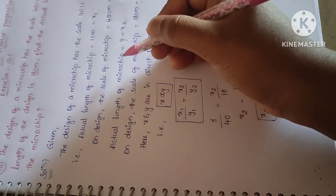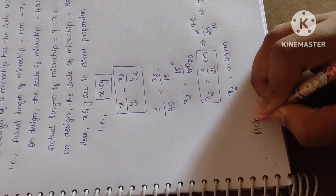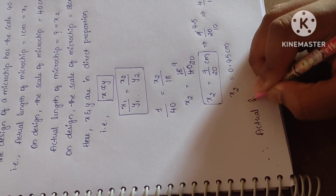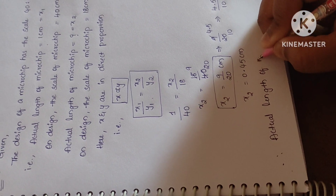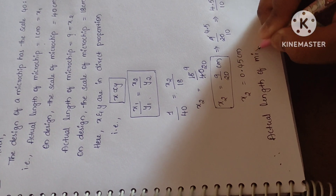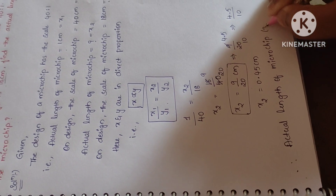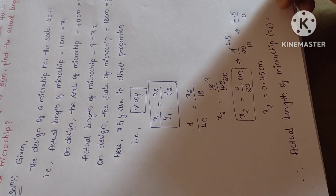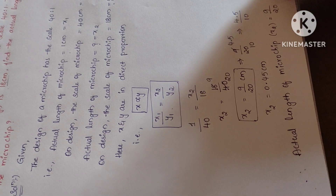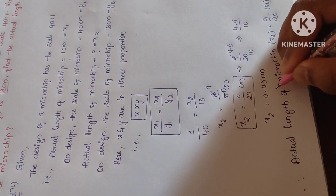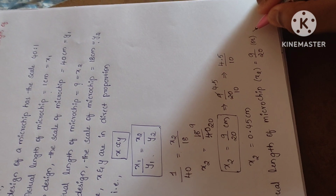Therefore, the actual length of the microchip whose design length is 18 centimeters is x2 equal to 9 by 20 centimeters, or equivalently 0.45 centimeters. This is the actual length of the microchip whose scale on the design is 18 centimeters.